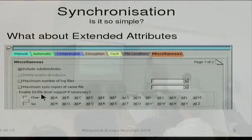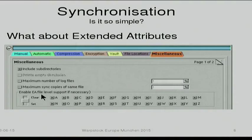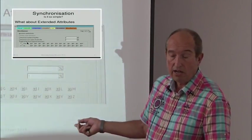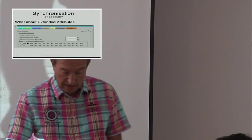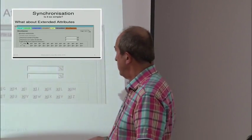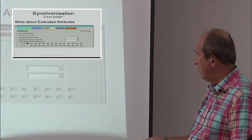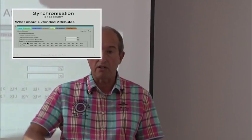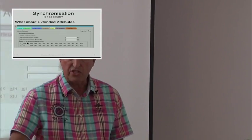I can enable EA file-level support if necessary. If I switch it on for all drives, if it ever detects a drive that doesn't support EAs, it will automatically create this database. For some reason you may not want it to do that, so here you can change that ability. There's also the position where you can say the maximum number of copies per file — so this is where you say I want 10 versions of a file, or 1,000, or what have you. It just takes more disk space.